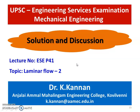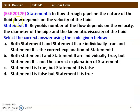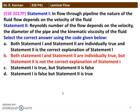We will take a few questions from laminar flow. The first question from the 2017 question paper has two statements. Statement 1: In flow through a pipeline, the nature of the fluid flow depends on the velocity of the fluid. Statement 2: Reynolds number of the flow depends on velocity, diameter of the pipe, and kinematic viscosity of the fluid. The correct answer is that both Statement 1 and 2 are individually true, but Statement 2 is not the correct explanation for Statement 1.